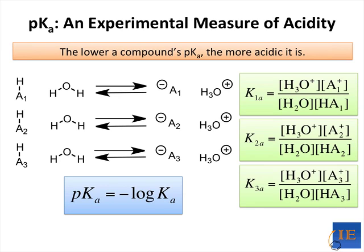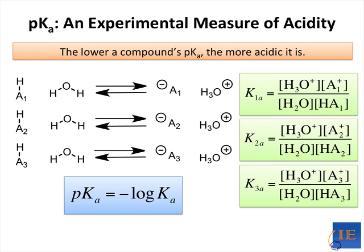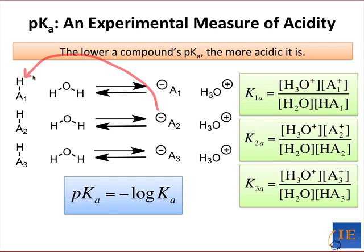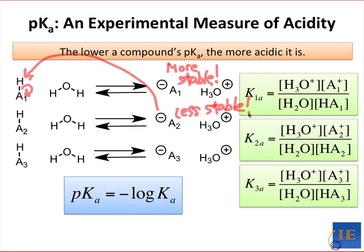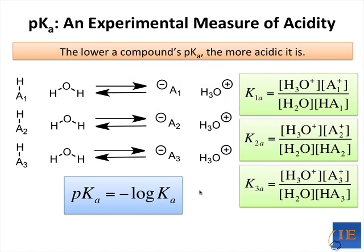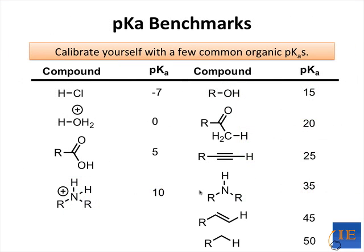If the pKa of HA1, for instance, is lower than the pKa of HA2, we can say with confidence that HA1 will willingly surrender a proton to A2-, because the neutral product HA2 is unlikely to give its proton back to A1-. This means that the charged species A1- is more stable than the charged species A2-. Although there isn't much math in organic chemistry, being calibrated on the most important numbers in organic is important, and pKa is one of the most important numbers to organic chemists.